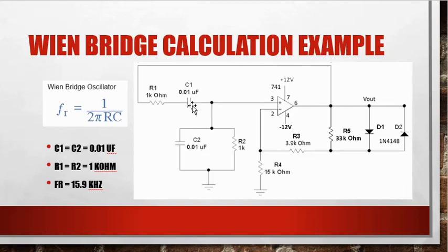So, C1 is equal to C2. They're both 0.01 microfarads. R1 is equal to R2, 1k ohm resistors. We pop them in this formula. We come out with 15.9 kilohertz.